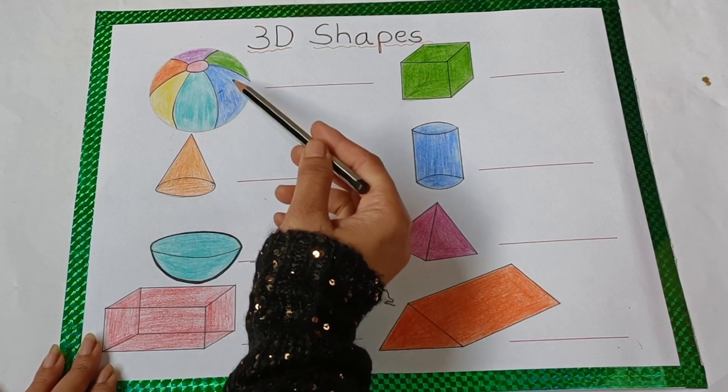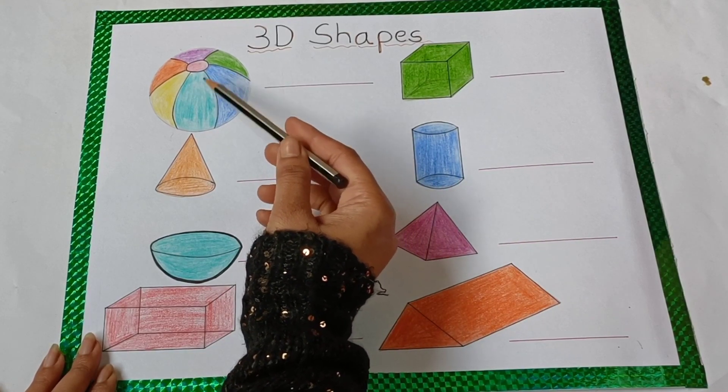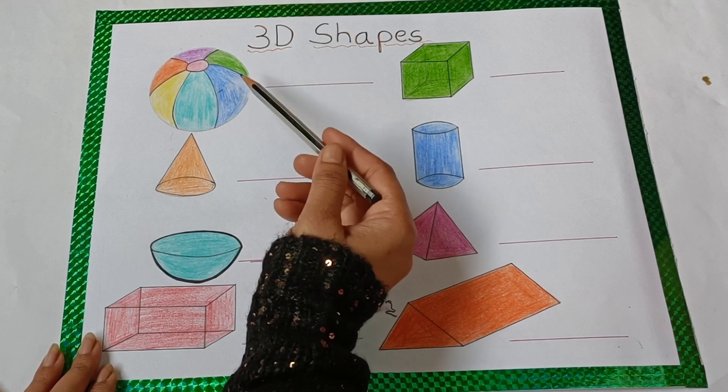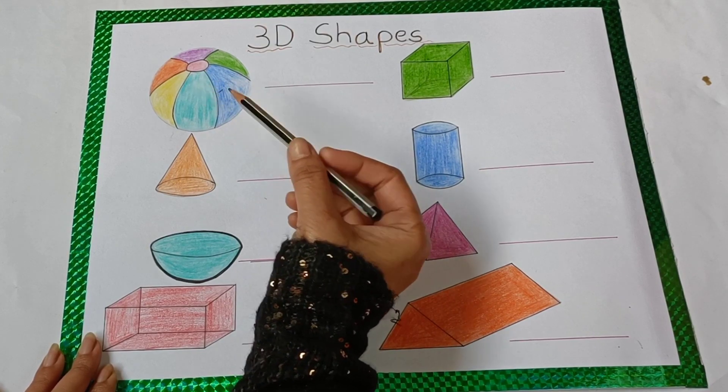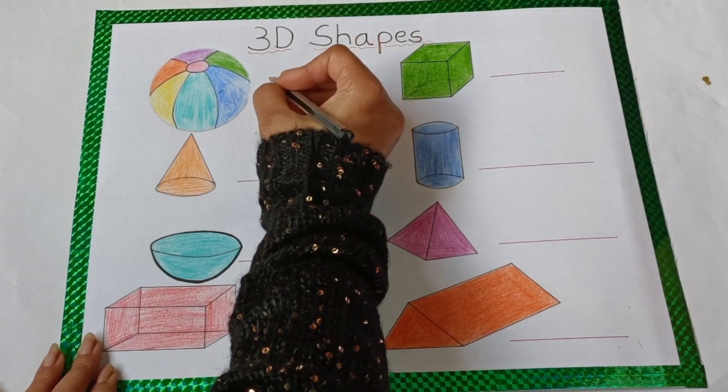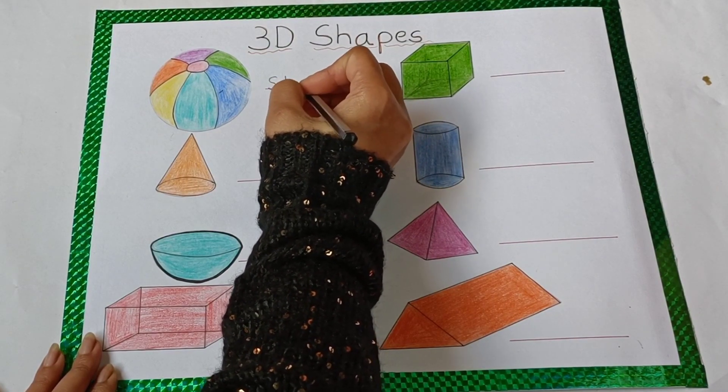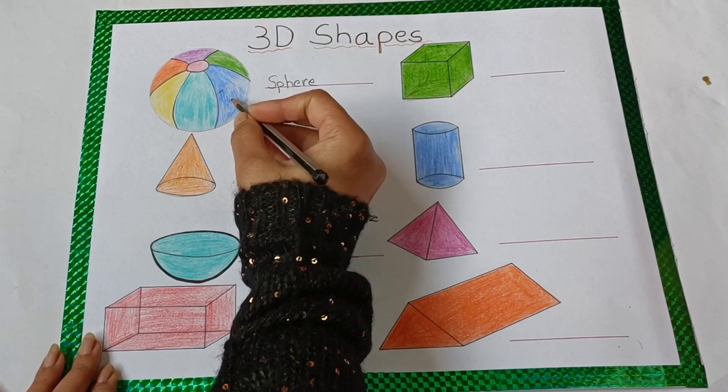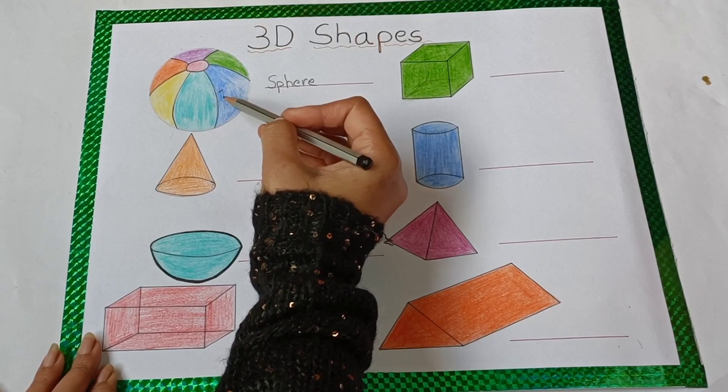This is a ball. This is a sphere shape. So right here, S-P-H-E-R-E. Sphere. This is a sphere shape.